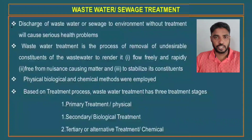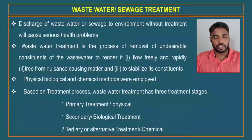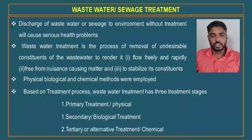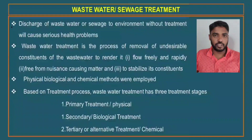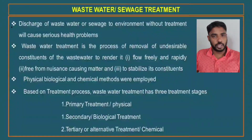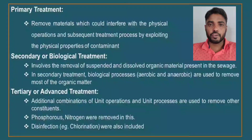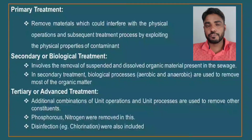For the treatment of wastewater, we use biological, physical, and chemical methods. Based on the treatment process used, wastewater treatment has three stages: the first is primary or physical treatment, the second is secondary or biological treatment, and the third is tertiary or chemical treatment. In primary treatment, we remove materials that will interfere with physical operations and subsequent treatment processes.